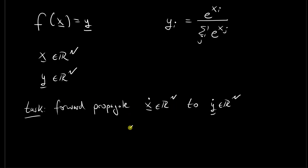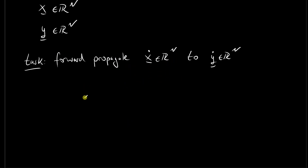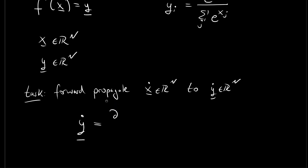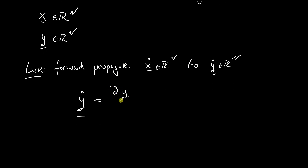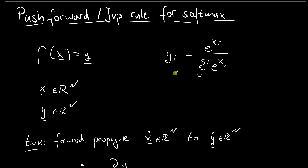In order to perform this forward propagation, we compute the Jacobian vector product. In symbolic notation, y_dot equals the Jacobian of the output with respect to the input multiplied with the tangent on the input. Since y and x are both n-dimensional, this is an n-by-n Jacobian matrix multiplied with an n-dimensional tangent input vector giving an n-dimensional tangent output vector. Since our operation is already defined in index notation, we will also derive the JVP in index notation.